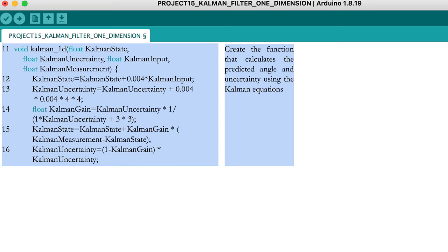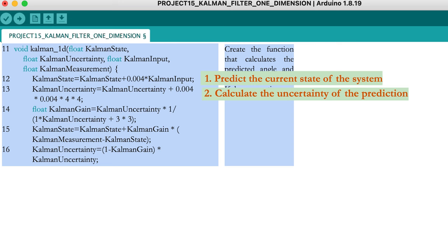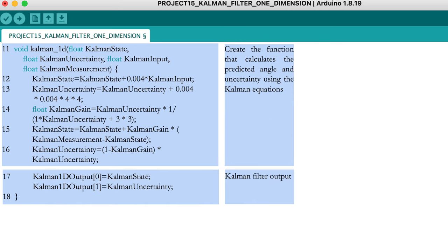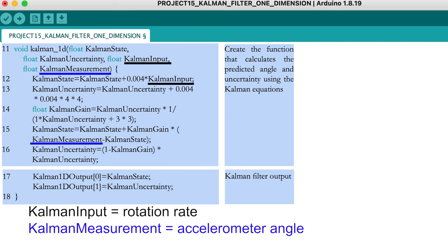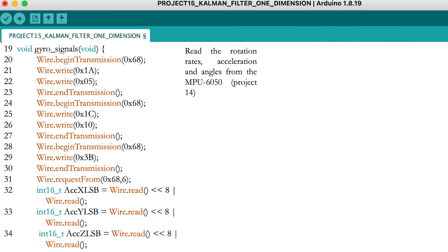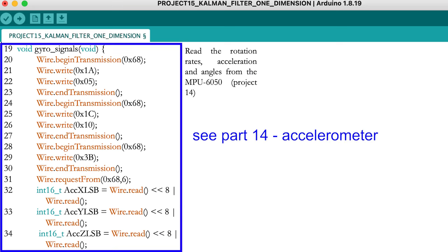Let's continue with the function for the Kalman filter. The function contains the equations to predict the state with rotation rate integration, calculate the uncertainty on the prediction, calculate the Kalman gain, update the predicted state with the accelerometer measurement, and finally update the uncertainty on the predicted state. The output of the Kalman filter function consists of a prediction for the state (the angle) and the corresponding uncertainty. Remember that the Kalman input contains the rotation rate measurement, the Kalman measurement is the accelerometer angle measurement, and the Kalman state contains the angle calculated with the Kalman filter. The other parts of the code are the same as in part 14.